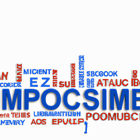Chapter Three of Economics in One Lesson again focuses on the broken window fallacy. Hazlitt explains that this fallacy is based on the idea that when a window is broken, the money spent to repair it creates jobs for the glazier. However, the money spent on the window could have been spent on something else — such as a new suit or a book — which would have created jobs in other industries. He argues that the broken window fallacy ignores the opportunity cost of the broken window, which is the value of the best alternative that was not chosen.